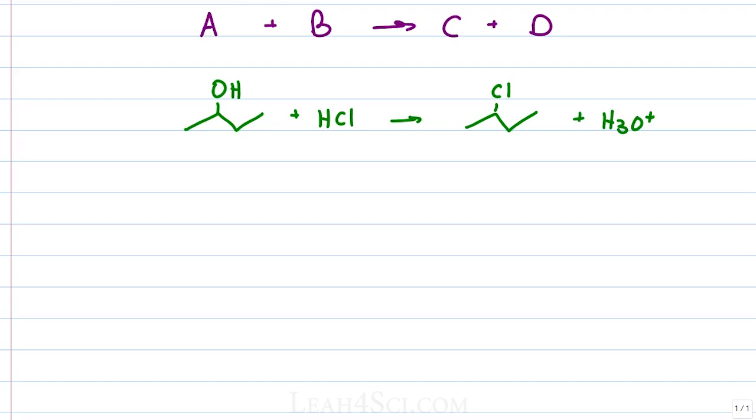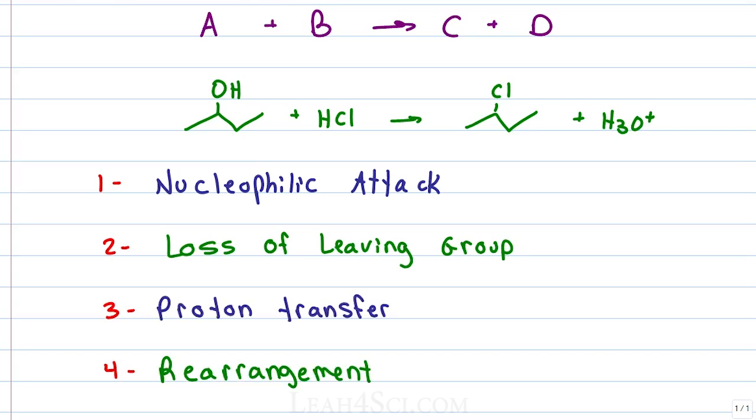There are 4 main types of mechanism patterns you'll see in organic chemistry: the nucleophilic attack, loss of a leaving group, proton transfer and rearrangement. While each one is a unique pattern, they all have one thing in common, they're looking at how the electrons are moving.